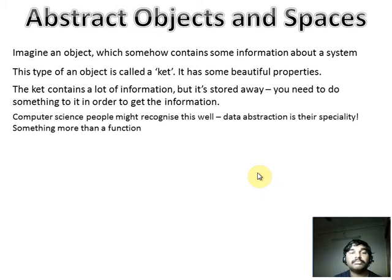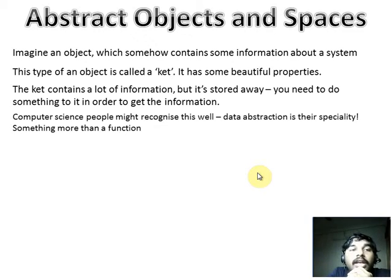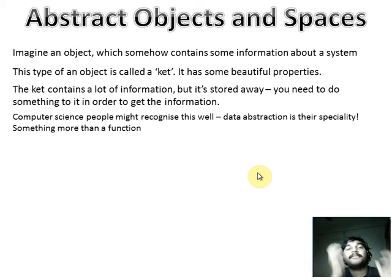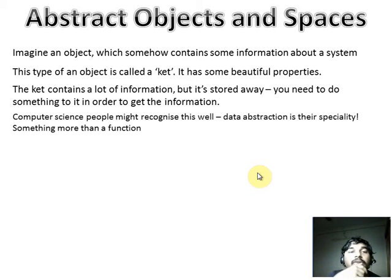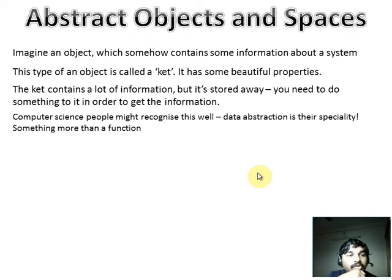Abstract objects are mathematical objects — it's like a box. You can imagine them to be a box that contains some information about a system. A system might have different types of information, and there might be a certain object which has a particular type of information about the system. This kind of object is called a ket — K-E-T, ket. It contains a lot of information, but just by looking at a ket you can't quite say what information it has.